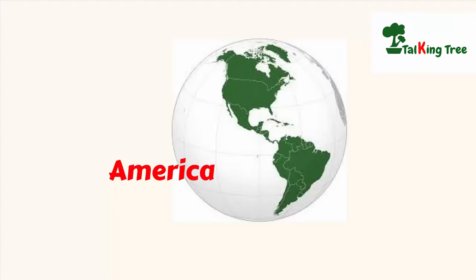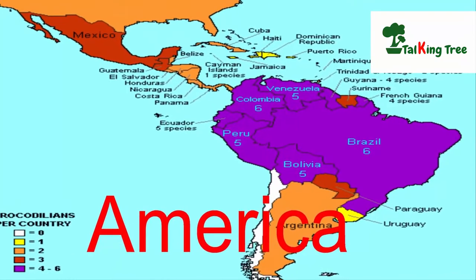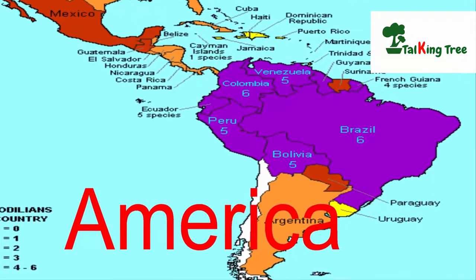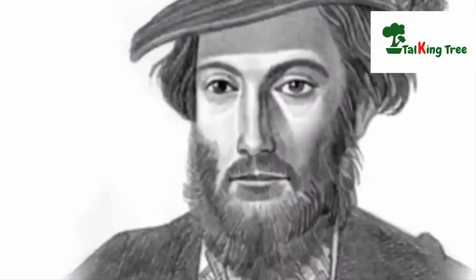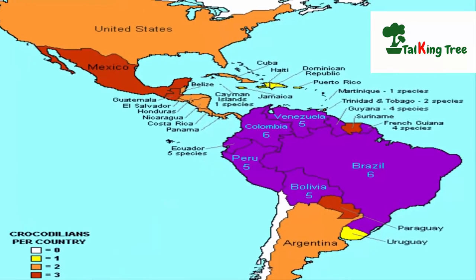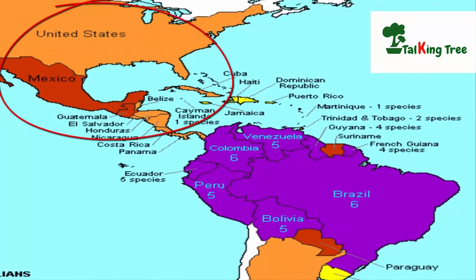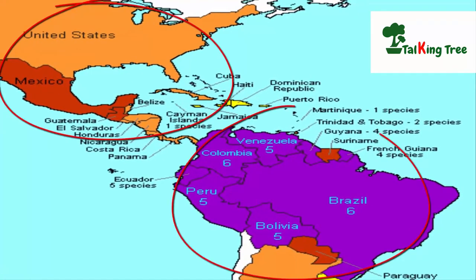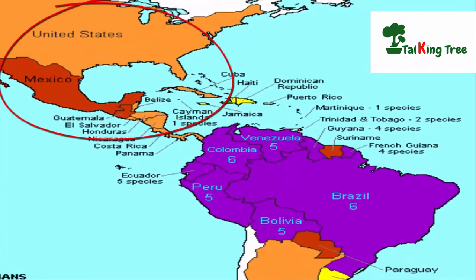Next on our list is America. As we all know, America was discovered by Christopher Columbus in 1499, but what we may not know is that it was named after a navigator who was with Columbus at the time of discovery. His name was Amerigo Vespucci. He was the first geographer who realized that the Americas were separate continents, and as a result, today we have North and South America as two different continents.